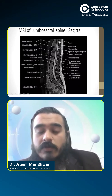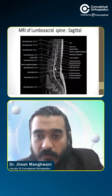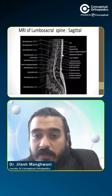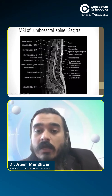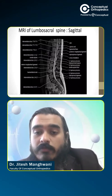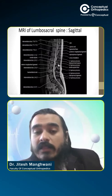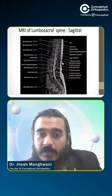This is the ligamentum flavum. The posterior longitudinal ligament is at the posterior aspect of the vertebral bodies. This is the supra-spinous ligament, which is present above the spinous process, and in between the spinous processes is the inter-spinous ligament.